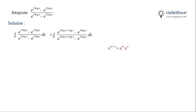Now using properties of exponents, we can write the first term in the numerator as e raised to 4 log x multiplied by e raised to log x. Similarly, in the denominator we can write the first term as e raised to 2 log x multiplied by e raised to log x.